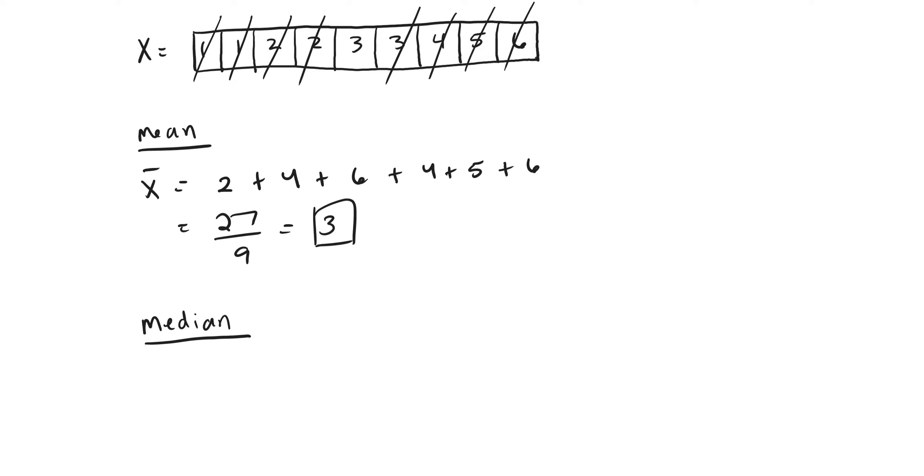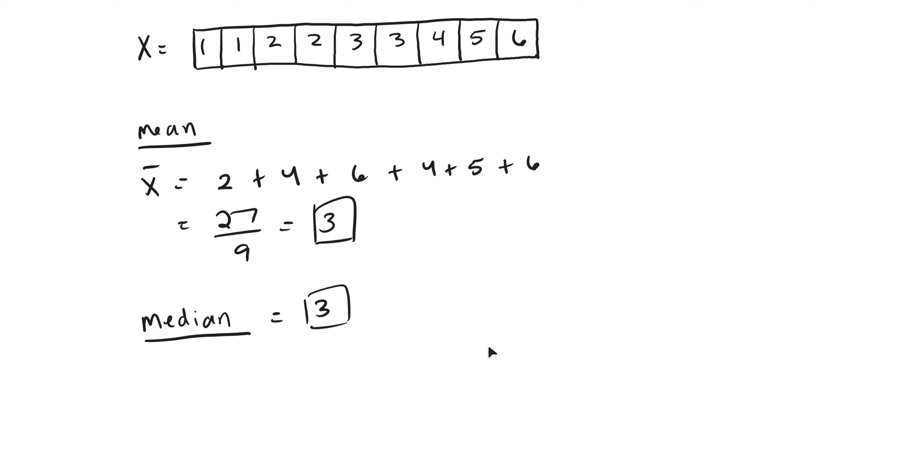Until eventually what happens is that you get down to one item or two items. And if you get down to, if on your last stroke, you get down to two items, you need to take the average of them. And if you get down to one item, like we have here, you just use that item right there. And so the median here is going to be three. And luckily enough for us, the median and the mean are exactly the same.